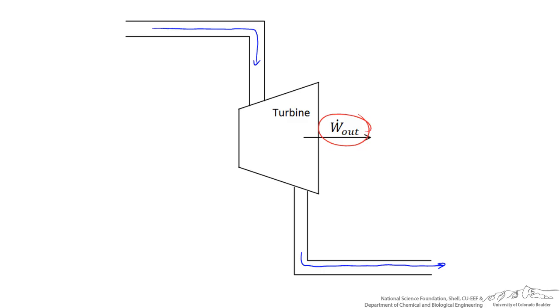It expands within the turbine and then exits at a lower temperature and lower pressure. The difference between the high energy of the fluid flowing in and the low energy of the fluid leaving is the shaft work that the turbine generates.